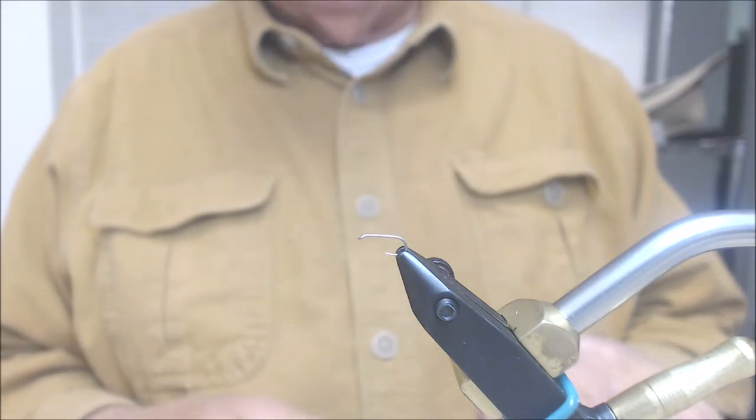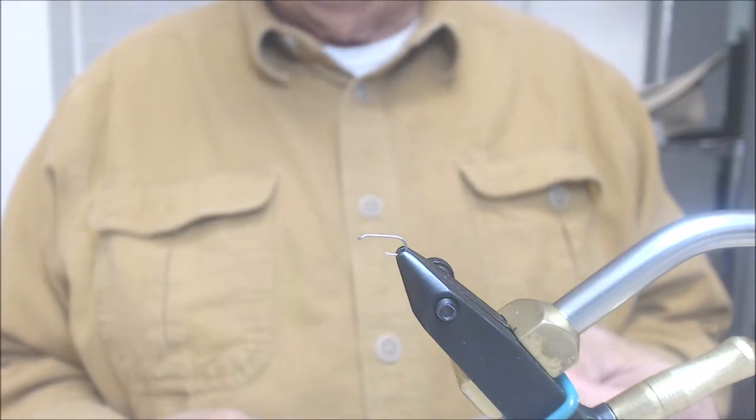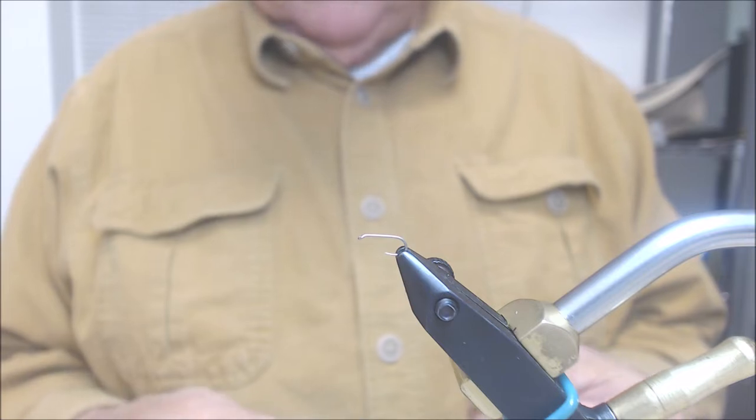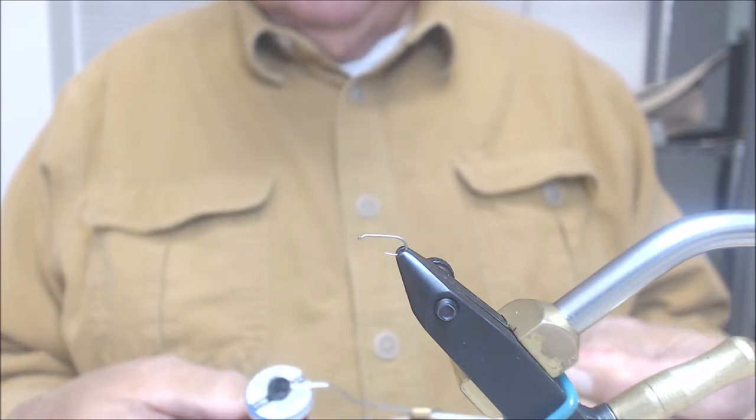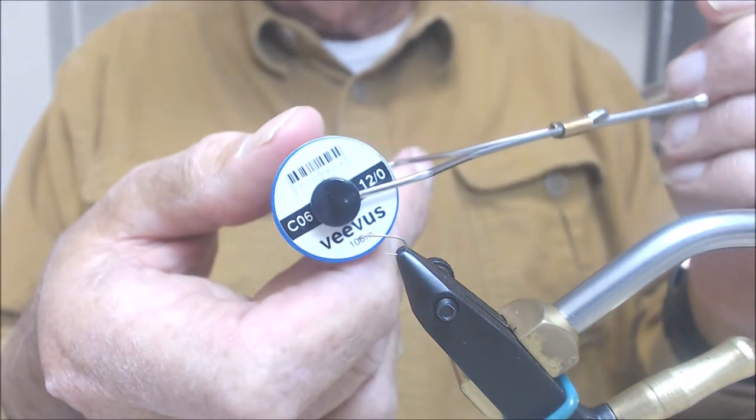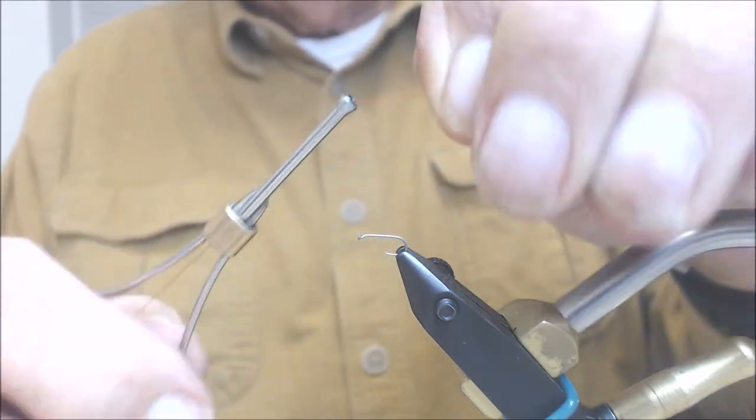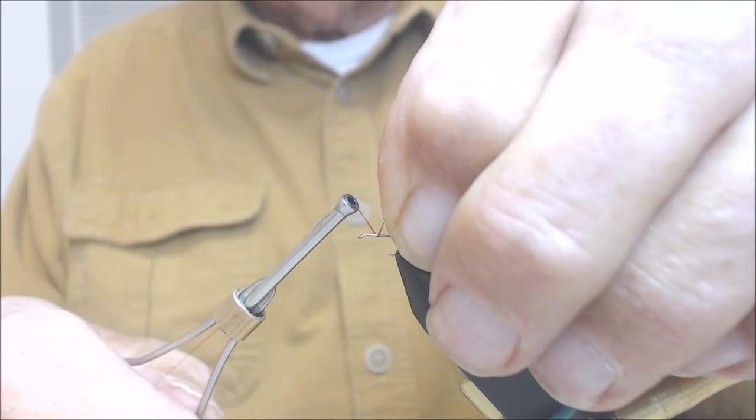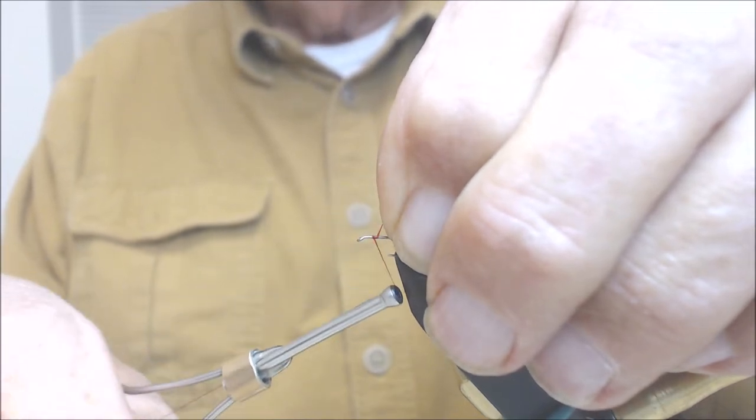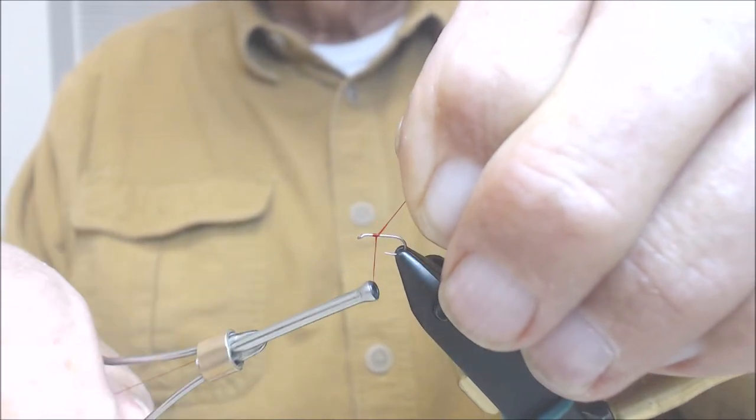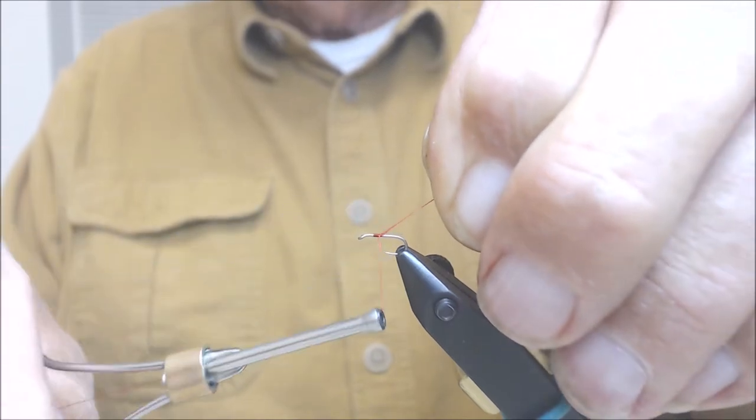I like to tie this in 18 and 20s, and I like to use both black and red threads for two different types of midges. I'm going to use a Vivas 12-aught red for this particular pattern. I'm going to start the thread about a third of the way down the hook shank. It's going to be a point of reference for us.